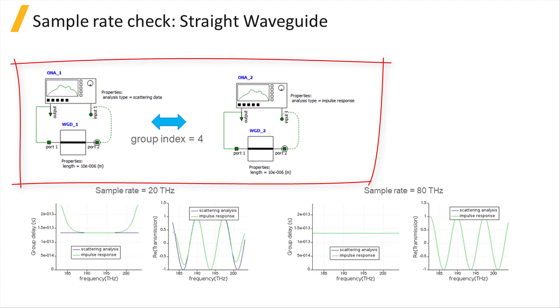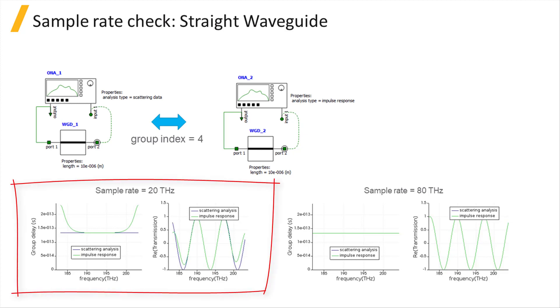Here is an example of this sample rate check for a straight waveguide with a length of 10 microns and a group index of 4. The Frequency Domain results are plotted in blue and the Time Domain results are plotted in green. The two leftmost plots show the group delay and the real part of the transmission for a sample rate of 20 Terahertz. The values agree at the center frequency of the simulation but begin to deviate away from it.